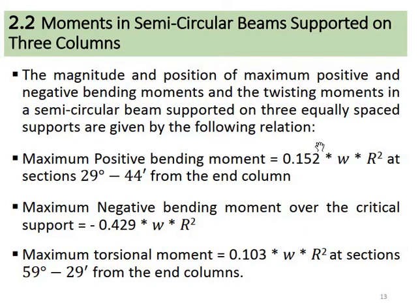We are dealing with a circular beam. It can be supported with circular columns. Using information like K1 and K2, for example, you can get the maximum torsion coefficient of 0.152, and the maximum negative bending moment coefficient is 0.499. If you use these values, you can look up the maximum coefficients from the table.